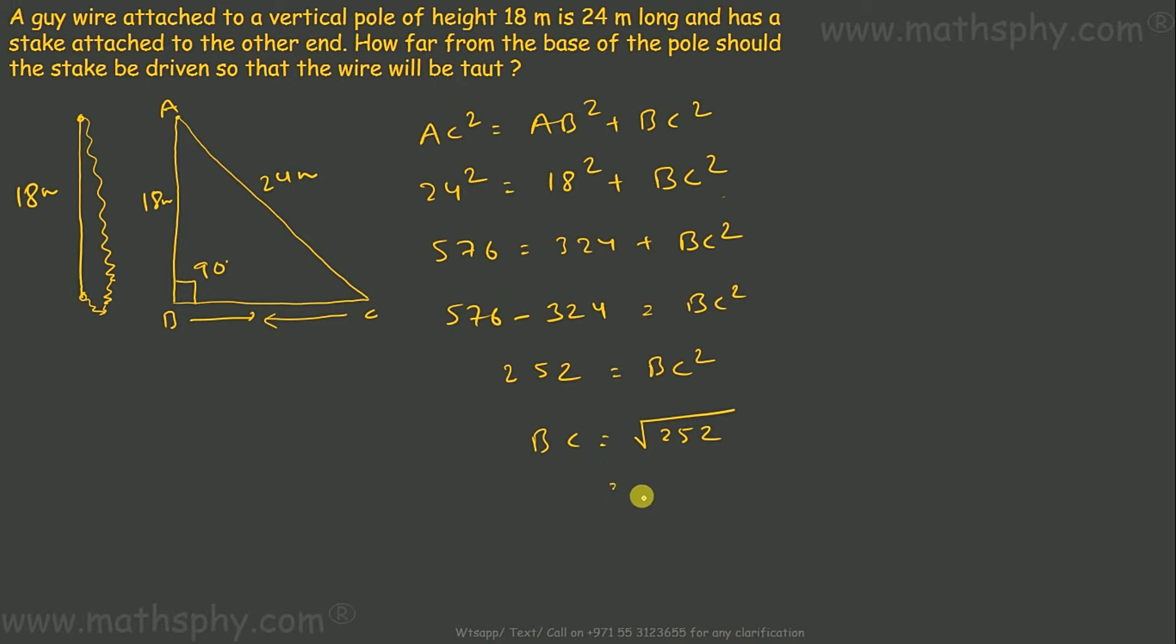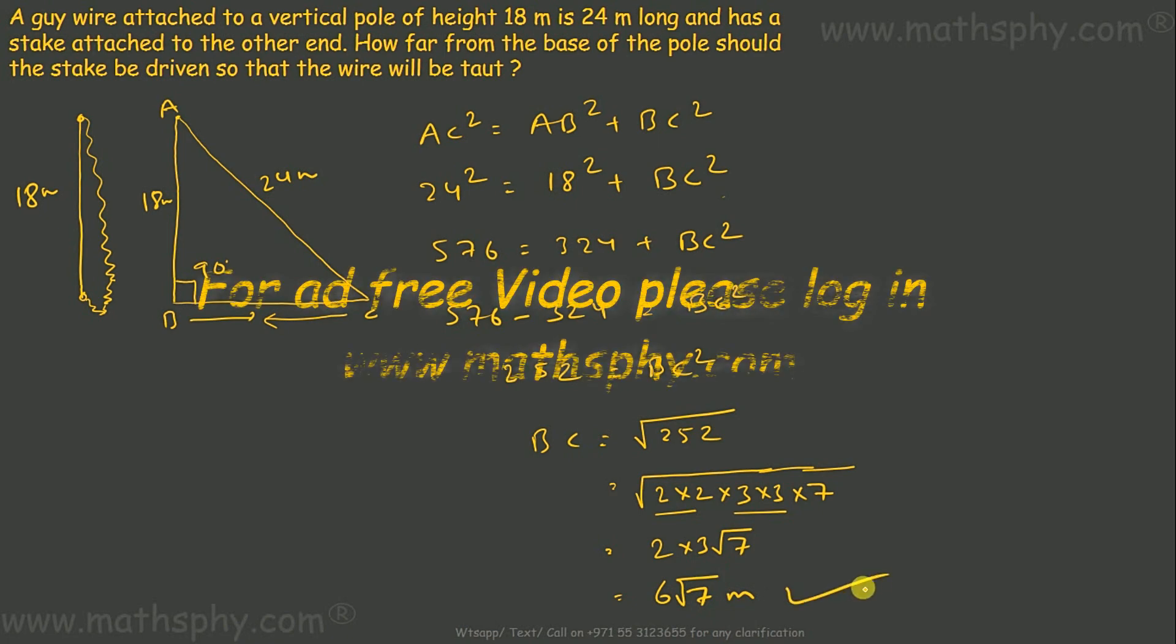So this can be written as 2 into 2 into 3 into 7, so which will give you 2 into 3 root 7, which is 2 times 3 is 6 root 7. That's the answer here: 6 root 7 meters, all right.